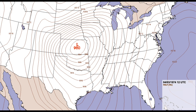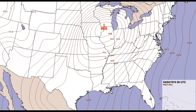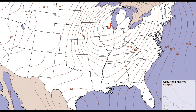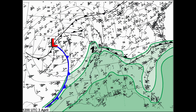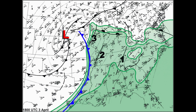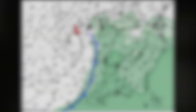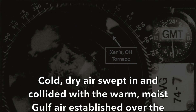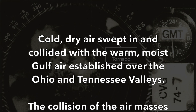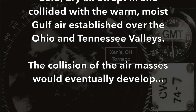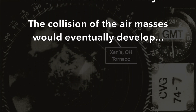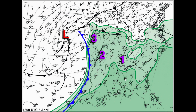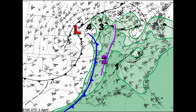During the day, the low pressure center would move rapidly northeastward towards Lake Michigan. The surface cold front continued moving eastward rapidly across the mid-Mississippi and Ohio Valleys. Cold, dry air swept in and collided with the warm, moist Gulf air established over the Ohio and Tennessee Valleys. The collision of the air masses would eventually develop at least three extremely intense tornado-producing squall lines. It was the second squall line that would develop the Xenia Ohio F5 tornado.